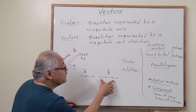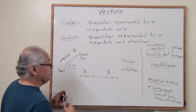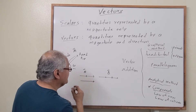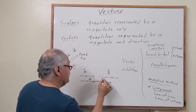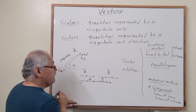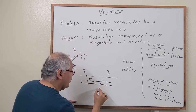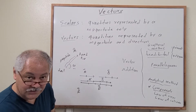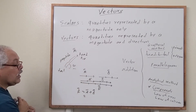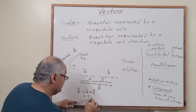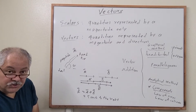We take the second vector and place the tail of the second one at the tip of the first one. The sum is the vector drawn from the tail of the first one to the tip of the last one. This new vector is called R — the resultant. R equals vector A plus vector B. In this case, the result is 5 units to the right.